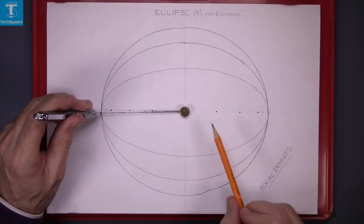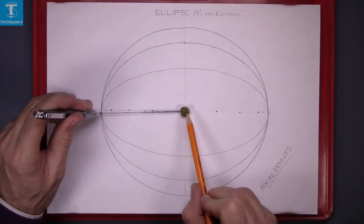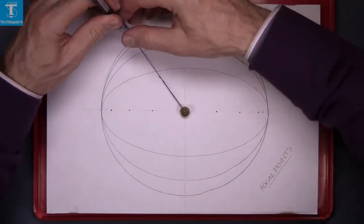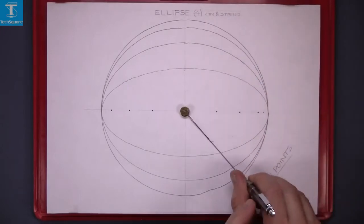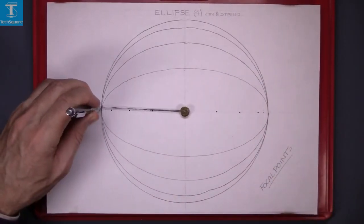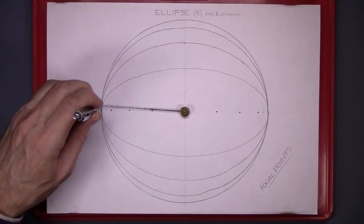Now I have just used one pin, so I should get a circle. The string is attached just to one pin in the center, and I draw the curve around—that is a circle. And that is the ellipse exercise complete.